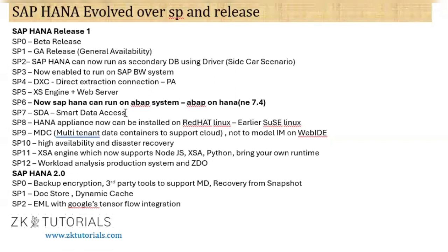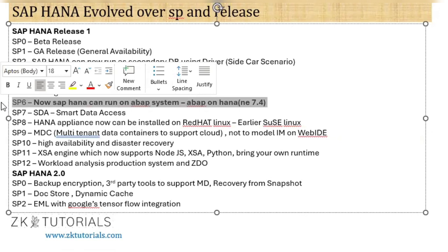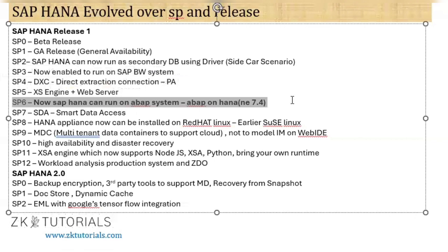The most important milestone is SP6, where SAP HANA can now run an ABAP system, and that has become ABAP on HANA. An interviewer may ask: what is the minimum support pack of HANA to run ABAP on HANA? The answer is SP6. And what is the minimum NetWeaver version needed to run SAP ABAP system on HANA as a primary database? The answer is NetWeaver 7.4. So minimum HANA SP6 and minimum NetWeaver 7.4 are required to run ABAP on HANA.